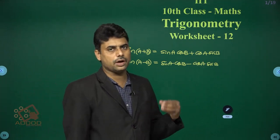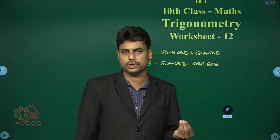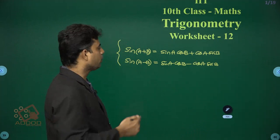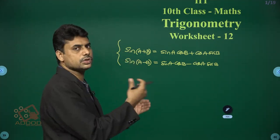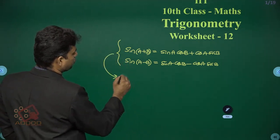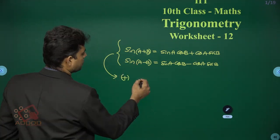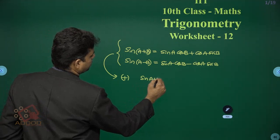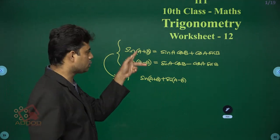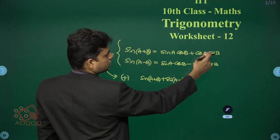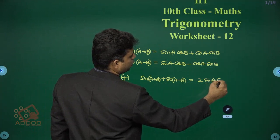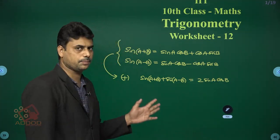We learned these two compound angle formulas. By adding them, we get another formula: sin(a+b) + sin(a-b). When we add the two right-hand sides, the cos a·sin b terms cancel, giving us 2·sin a·cos b.